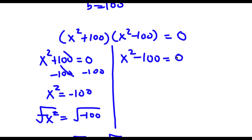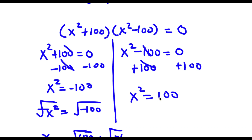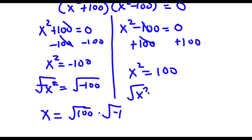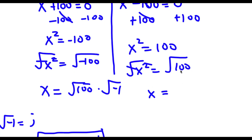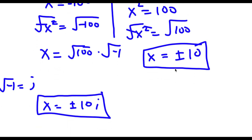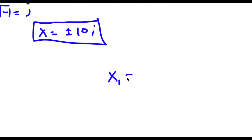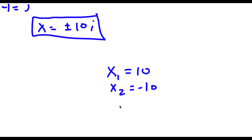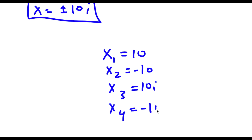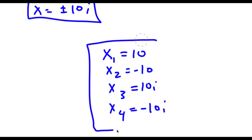For x squared minus 100 equals 0, I add 100 on both sides so x squared equals 100. Taking the square root of both sides gives x equals plus or minus 10. So my four solutions are x equals 10, x equals negative 10, x equals 10i, and x equals negative 10i.